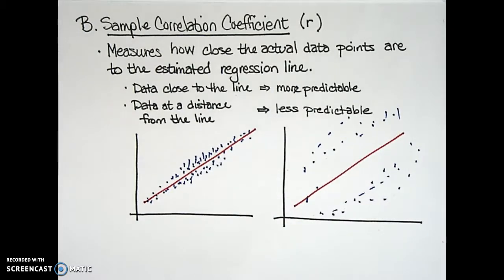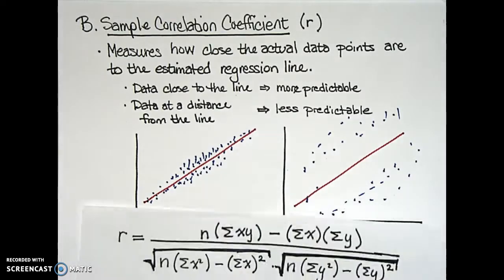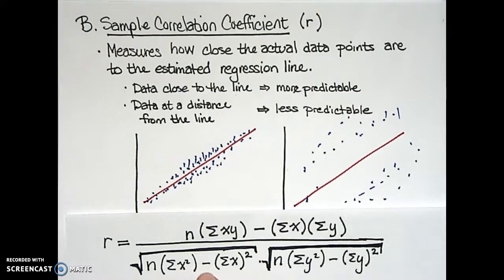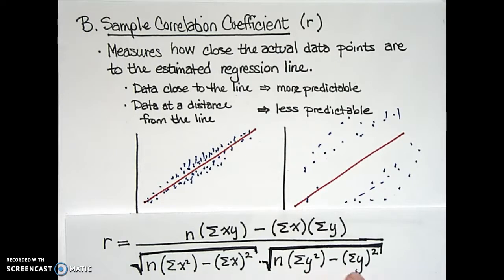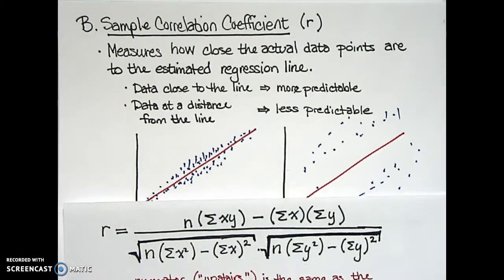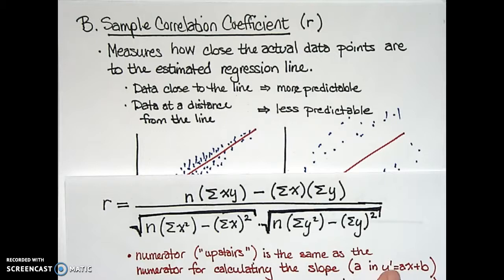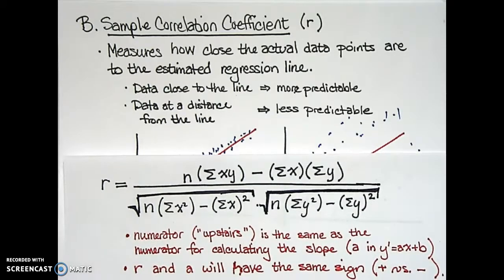To more rigorously determine how predictable a relationship is — beyond simply looking at a scatter diagram — we turn to the sample correlation coefficient, typically represented by the lowercase letter r. The formula for r is: n times the sum of xy, minus the sum of x times the sum of y, all over the square root of [n times the sum of x-squared minus the sum of x values squared] times the square root of [n times the sum of y-squared minus the sum of the y values squared].